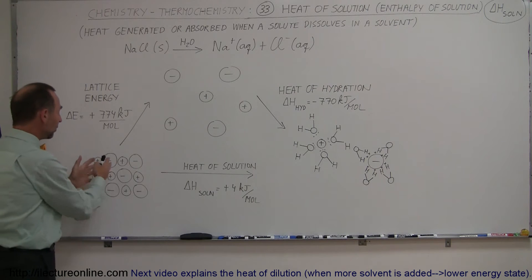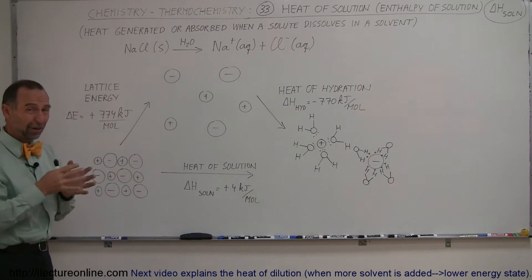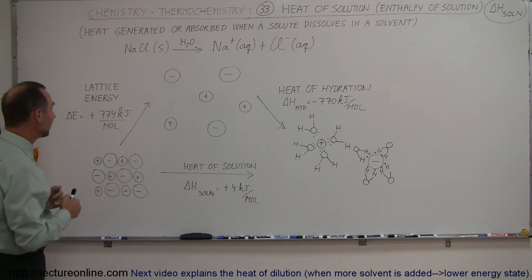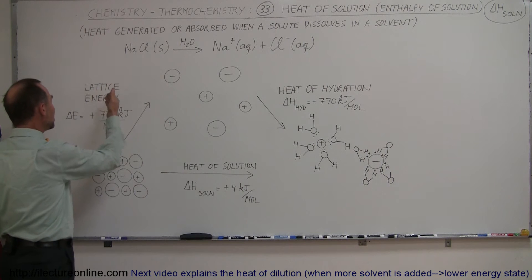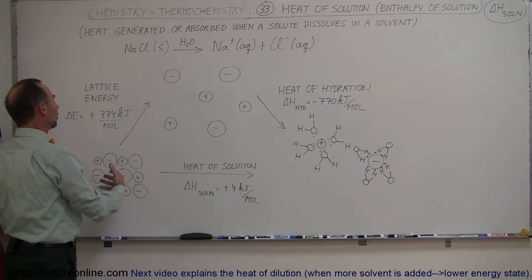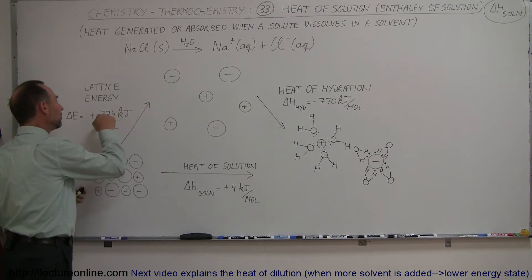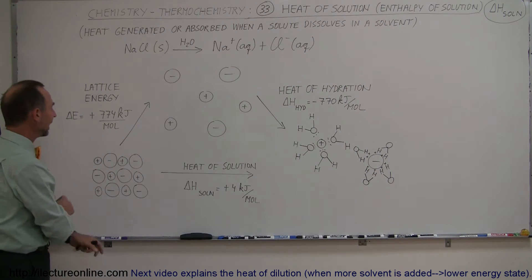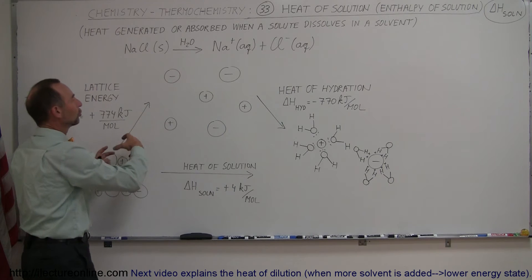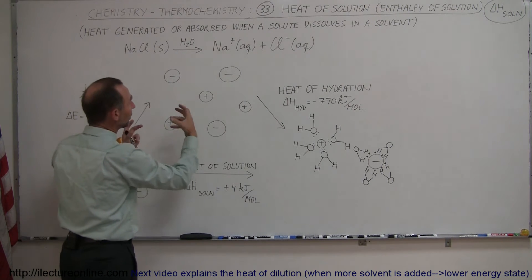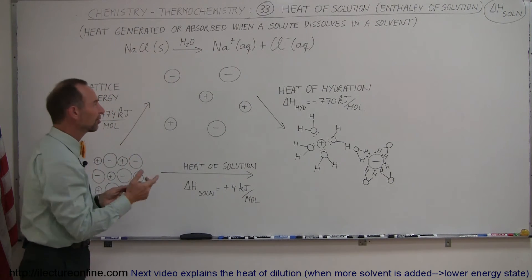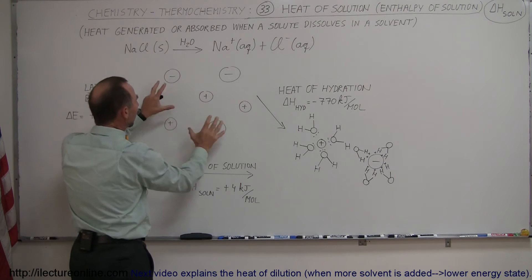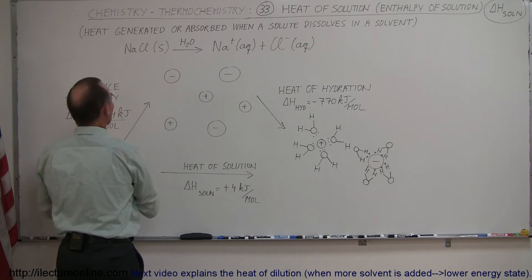So to pull this apart, you'd have to work very hard at it. You have to put a lot of energy into it. And so the lattice energy has to be released. We have to put 774 kilojoules of energy per mole of sodium chloride in order to pull the molecules, or I should say the atoms, apart. Of course, they're called ions because they're ionic. And so to pull the ions apart, you have to put in that much energy per mole.